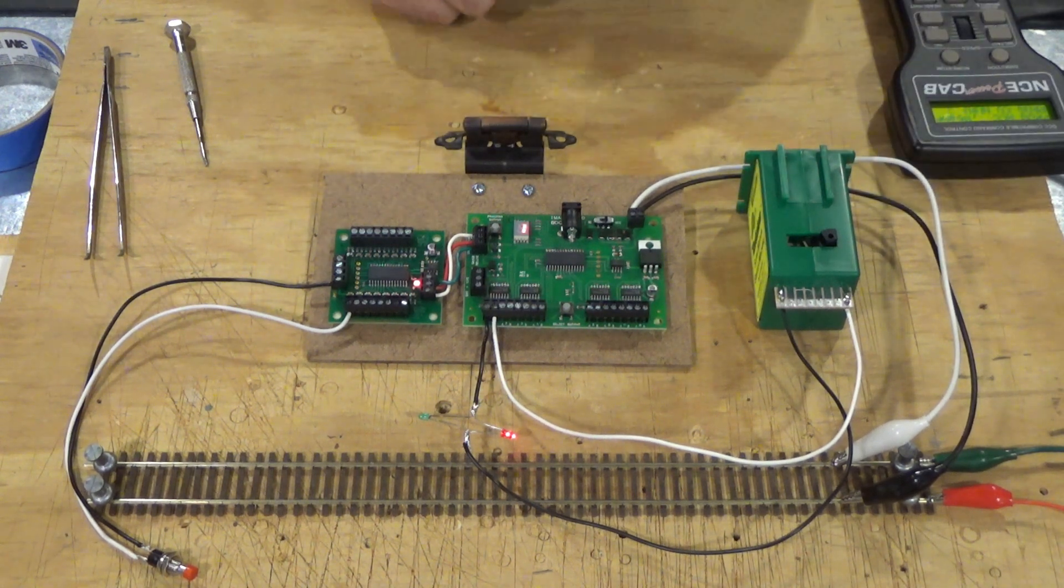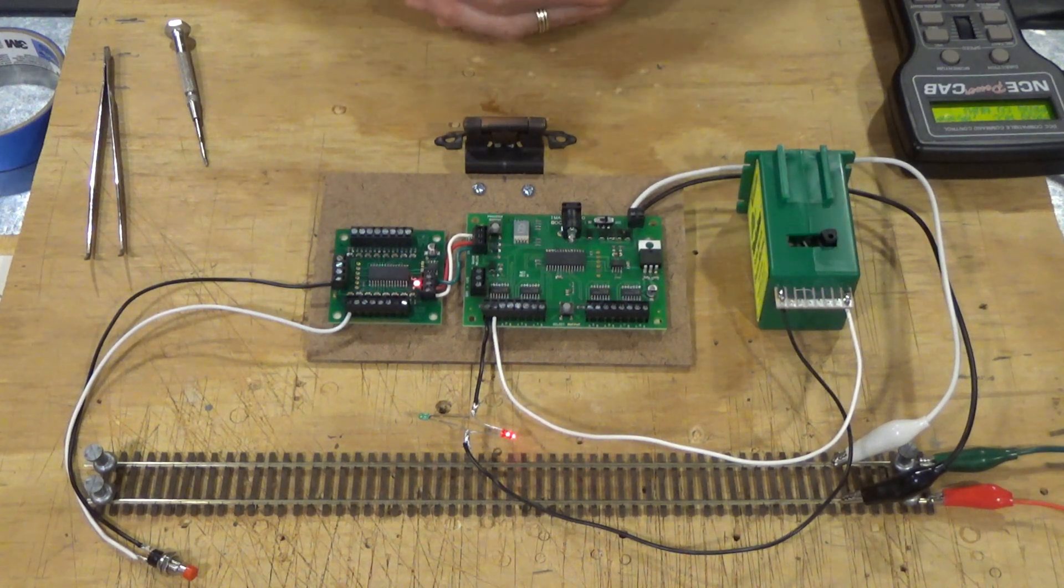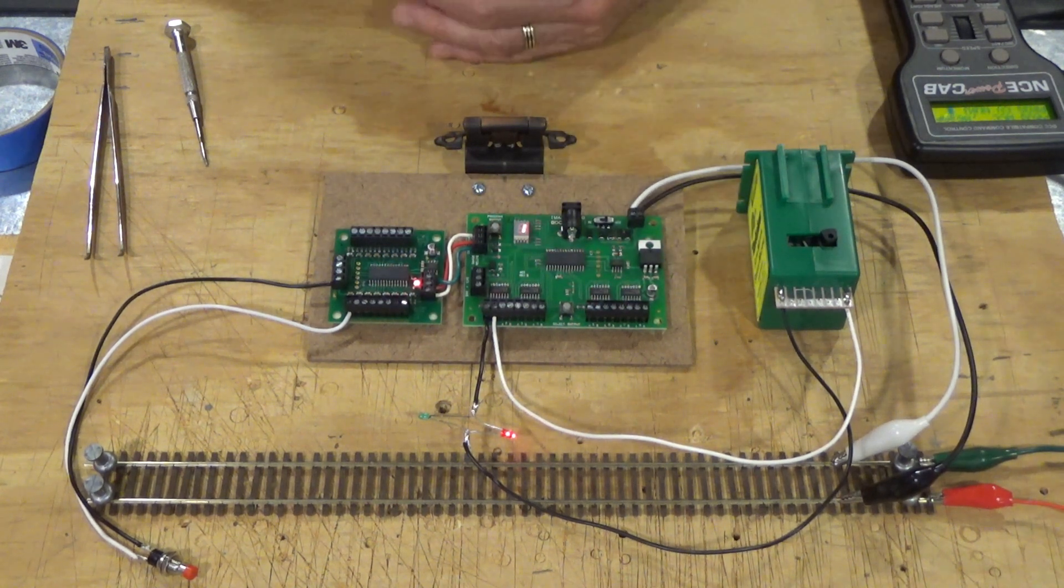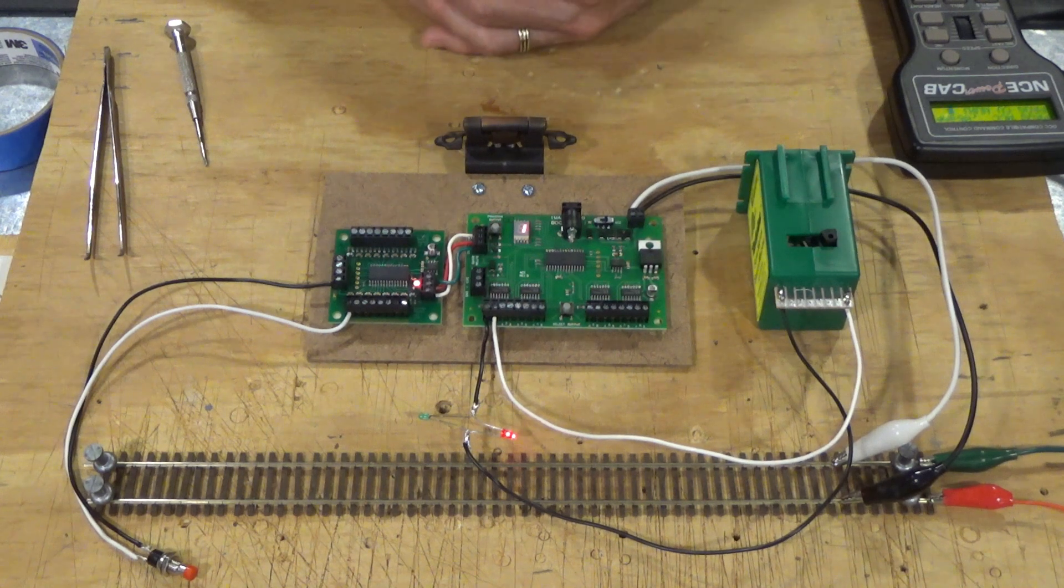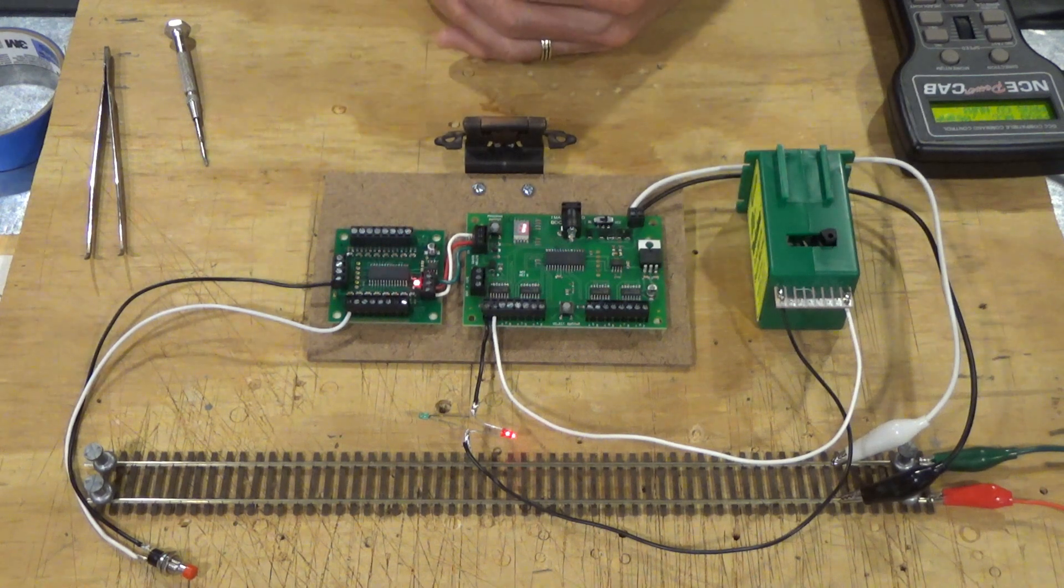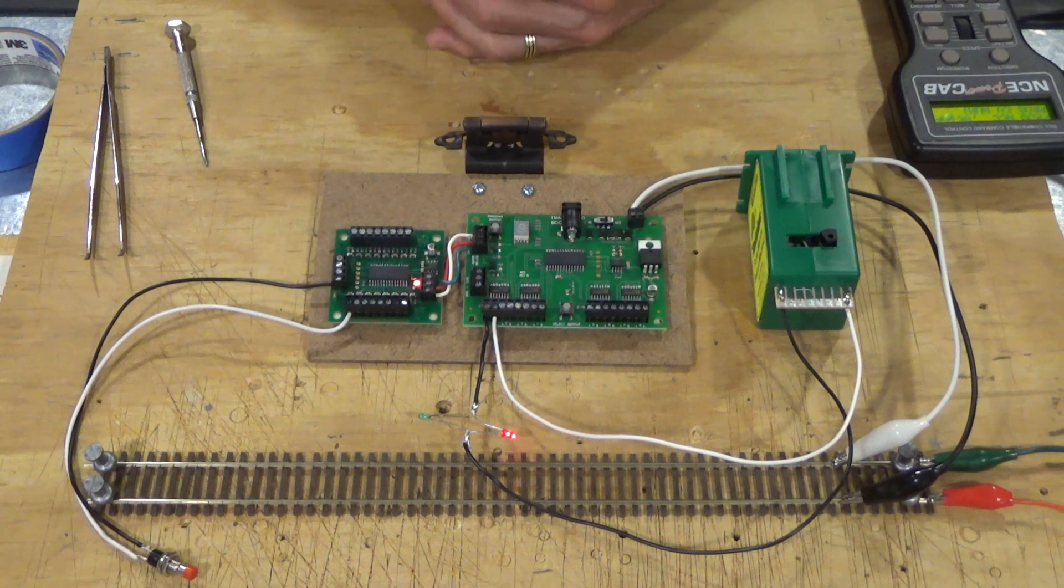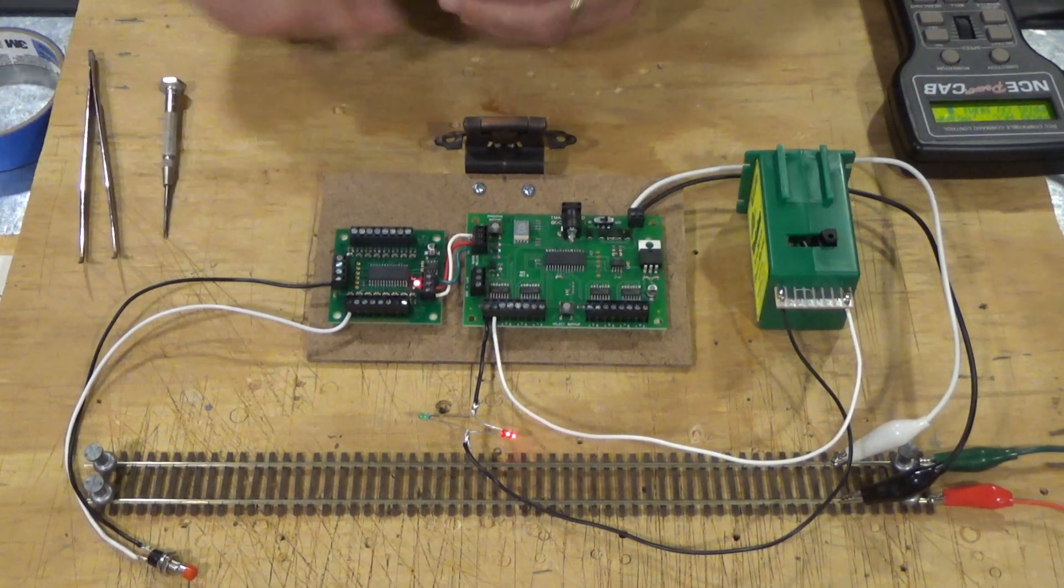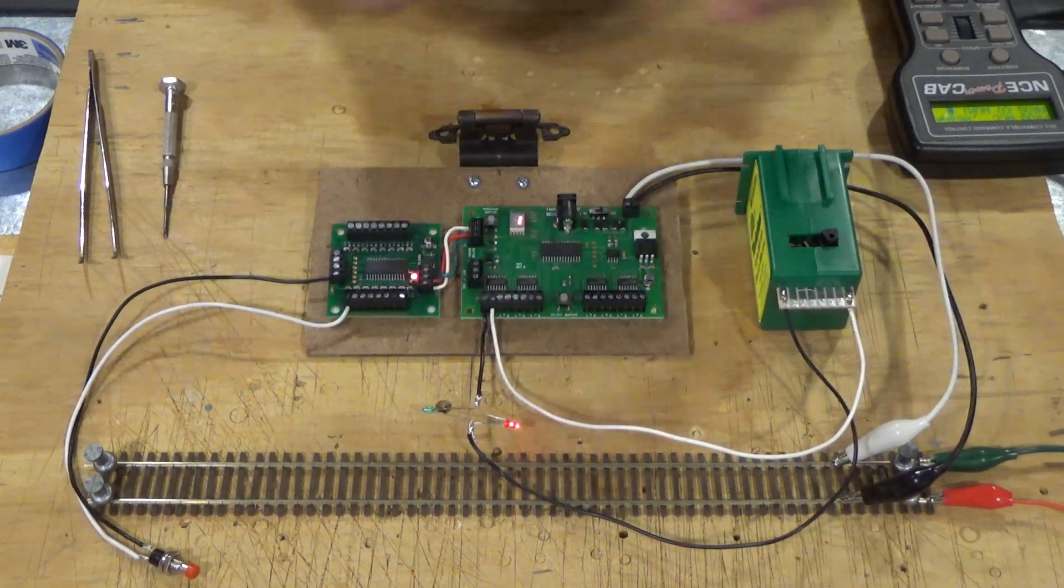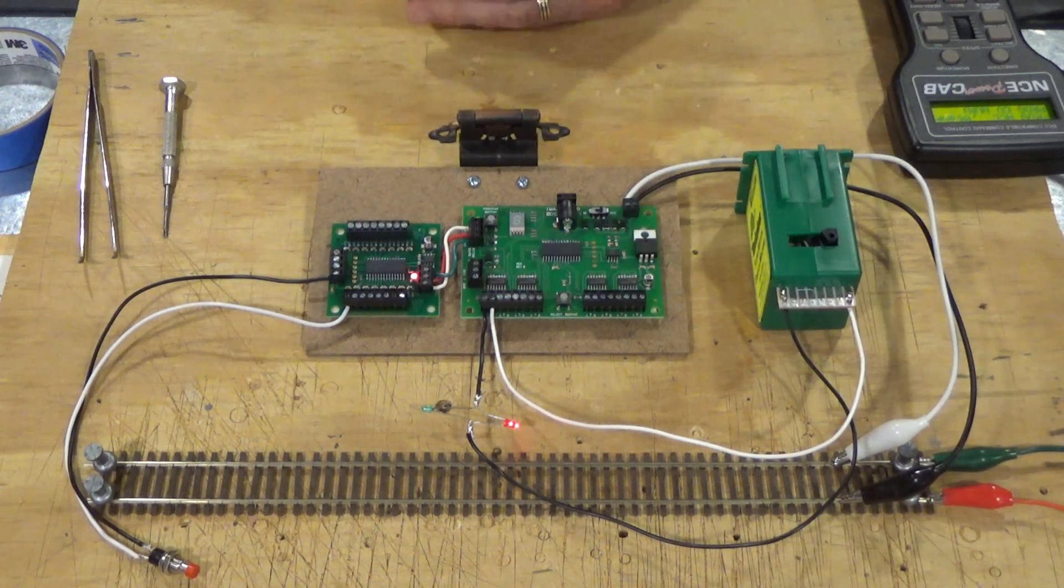Now, if you don't have a NCE system, or one that has a specific accessory programming mode, then you just use OPS programming using the same steps as I showed you here. Select accessory address or local address 1, and program CV 548 to 1. Now, there's a number of other things that you can program that are described in the manual and the instructions, but I'm not going to go there with you. It would take a lot of extra time, and these videos are getting a bit long. So, that's pretty much it. It's a fairly simple, straightforward system, easy to reprogram, easy to set up and use.